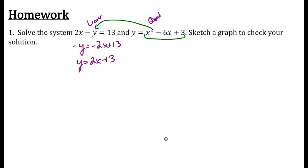But all you really had to do was pick up this quadratic and put that in for y. But I think it's a little bit cleaner to do it this way, where you get y equals 2x minus 13 and substitute that into the quadratic. So 2x minus 13 equals x squared minus 6x plus 3.